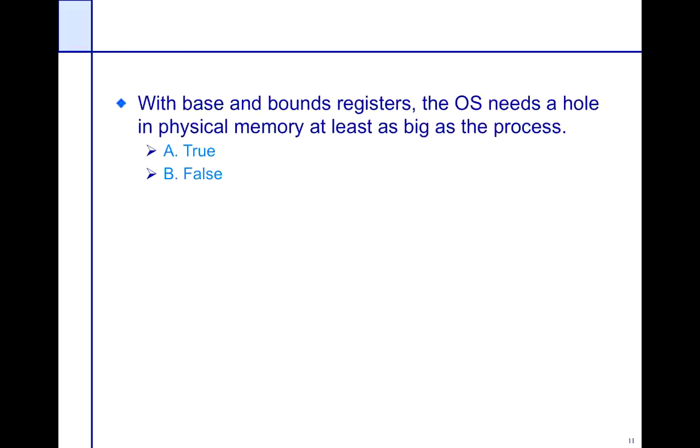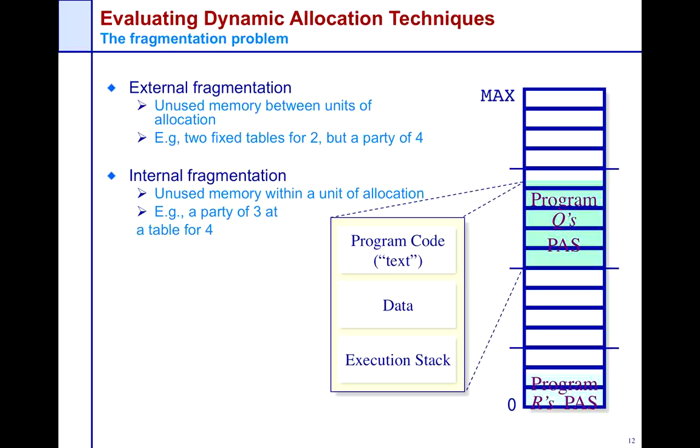The answer is true in this case, and you'll see why that is as we go along. So let's take a look at the dynamic allocation techniques — that is, how we're going to vend out space to these processes — and focus on the specific aspects of the fragmentation problem. There are two fragmentation problems: external and internal.